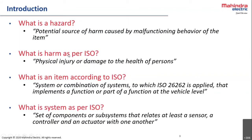Harm is the physical injury or damage to the health of persons. An item is a system or combination of systems to which ISO is applied, and it has to implement a function or specific function at vehicle level. A system should be a set of components — at least you should have a sensor, controller, and actuator working with one another.